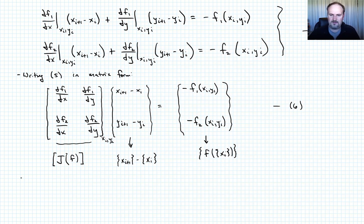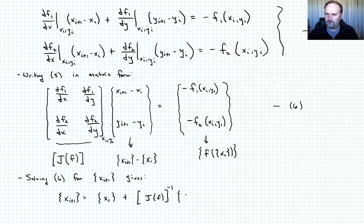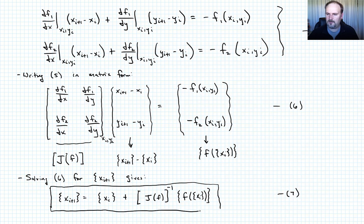And now all I need to do is I'm trying to solve for x of i plus 1 because that's the solution, that's my new solution I'm going to guess. So solving equation 6 for the quantity x of i plus 1 gives the following: x of i plus 1 is going to be equal to x sub i, so it starts out similar to what we had in the 1D case, but now we have this term here that looks like the inverse of the Jacobian matrix times this quantity F, which is a function of x sub i. Call this equation 7. Let's box this in. This is Newton's method for a system of equations.